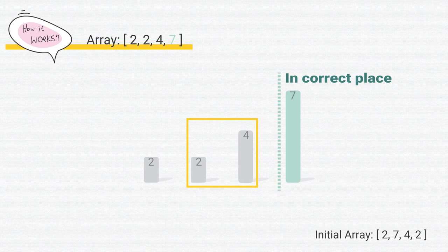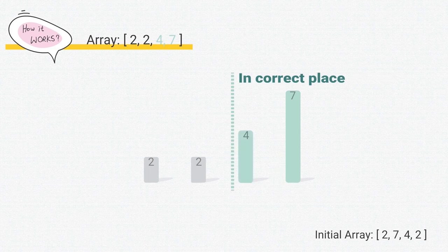The rectangle has now reached the dashed line, which indicates our second scan is finished. 4 is in its right position, so we move the dashed line to before 4, to remind ourselves that we don't need to do anything across the dashed line.